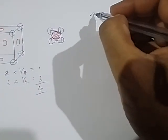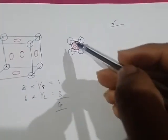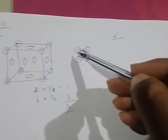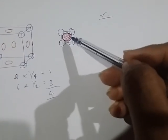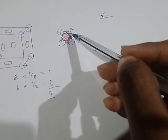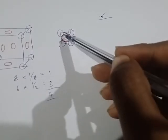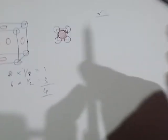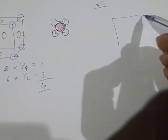So in the FCC structure, the number of atoms per unit cell is equal to 4. The next parameter is the atomic radius, represented simply as R. This atom is close-packed, and this is the face center atom, indicating the direction of the atom arrangement.